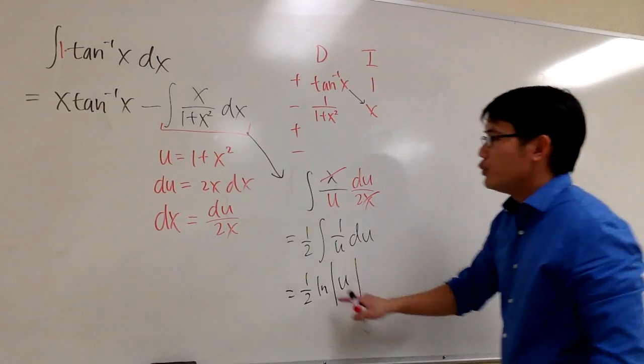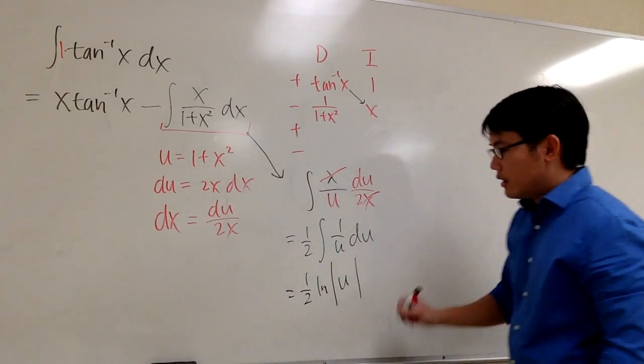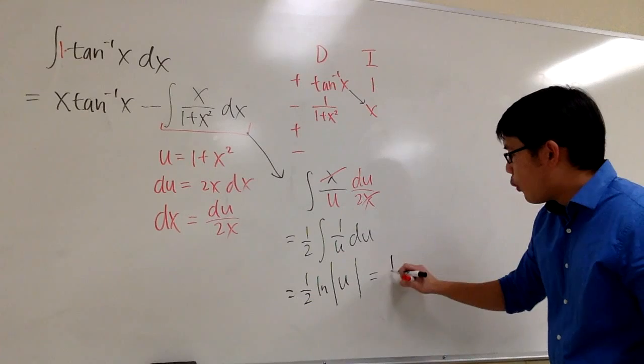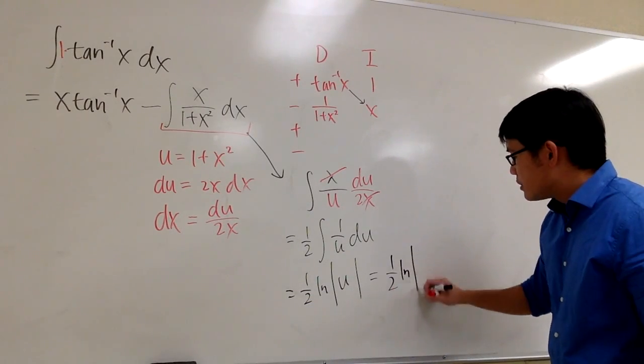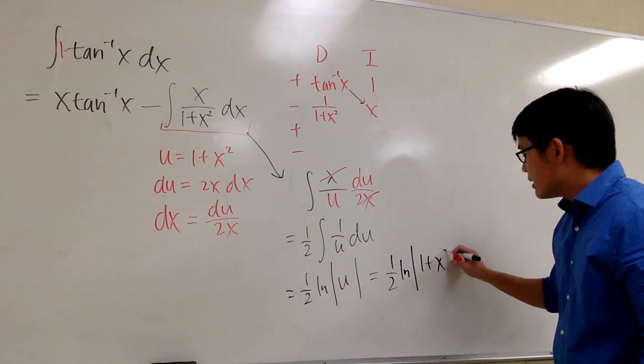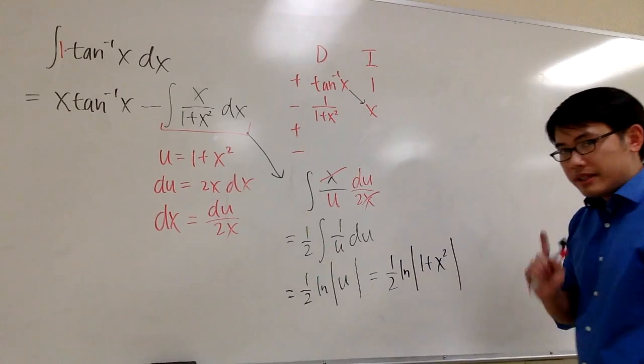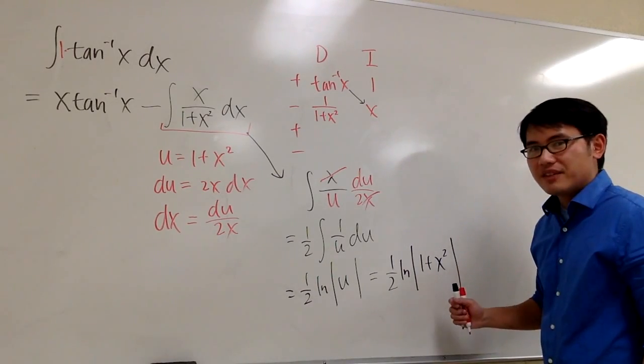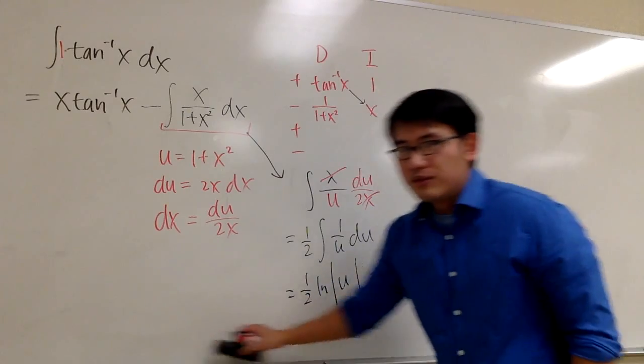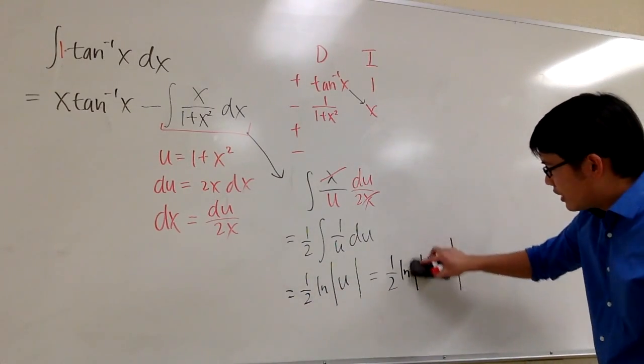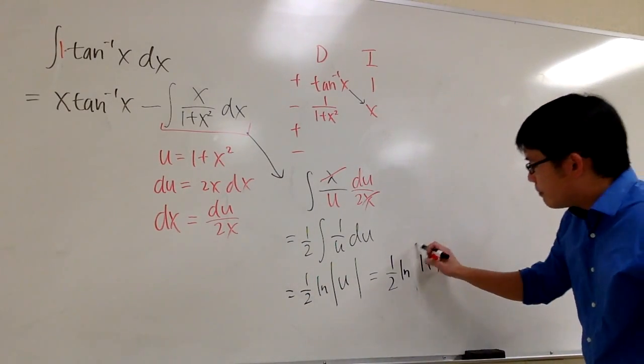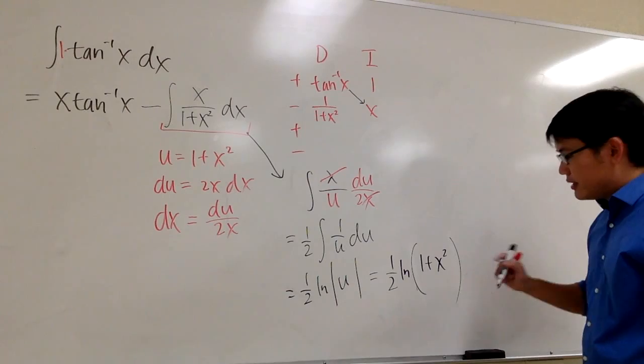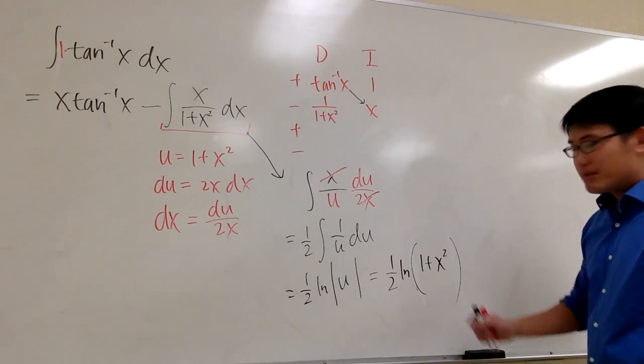u is equal to what? u is equal to 1 plus x squared. So finally, we will just change this to 1 half ln absolute value of 1 plus x squared. But then take a look at this. Plus x squared is never zero, it's never negative. In another word, the absolute value is not needed. So we can lose the absolute value and then use the parentheses instead. Doesn't really matter, but this is more legit.